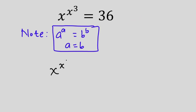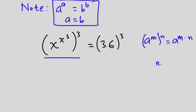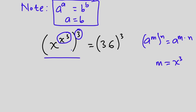Now let's get back to the question. We have x to the power x to the third power is equal to 36. Let's go ahead and cube each side of the equation, then apply the power rule which states that a to the power m to the power n is the same as a to the power m times n. Note that here m is equal to x to the third power, so if you multiply this 3 by just part of this you are going to get a wrong answer.